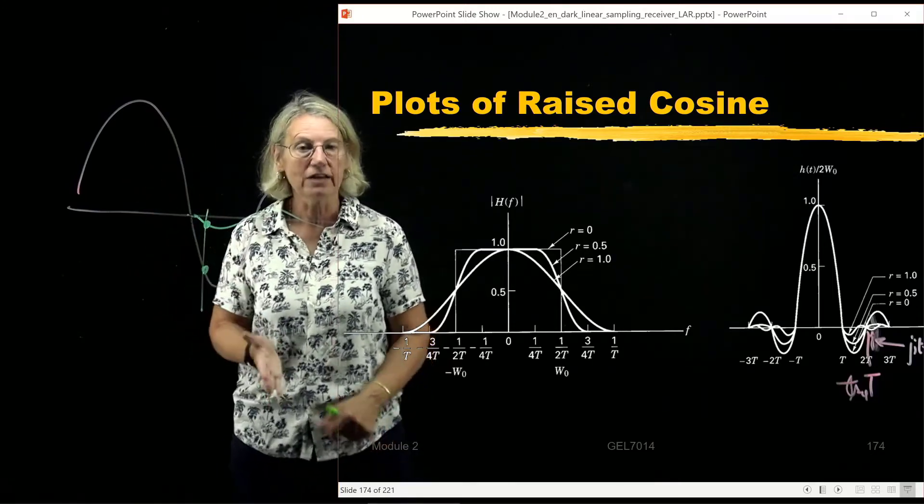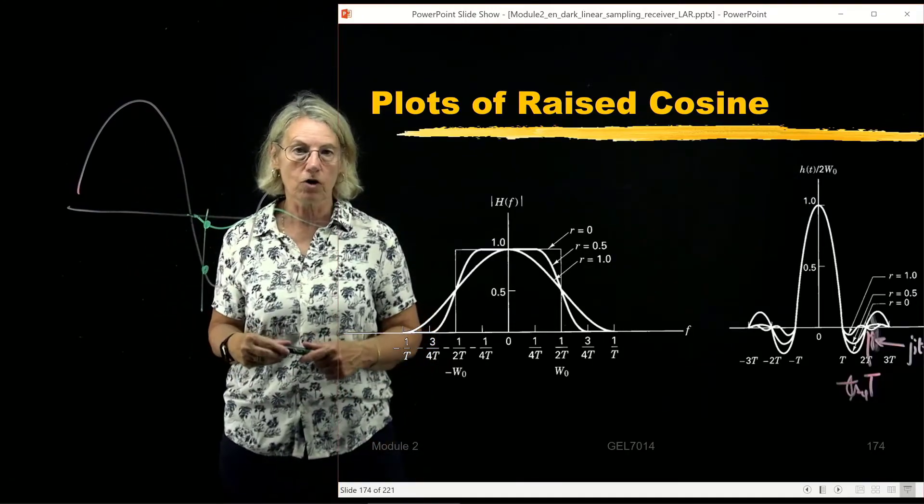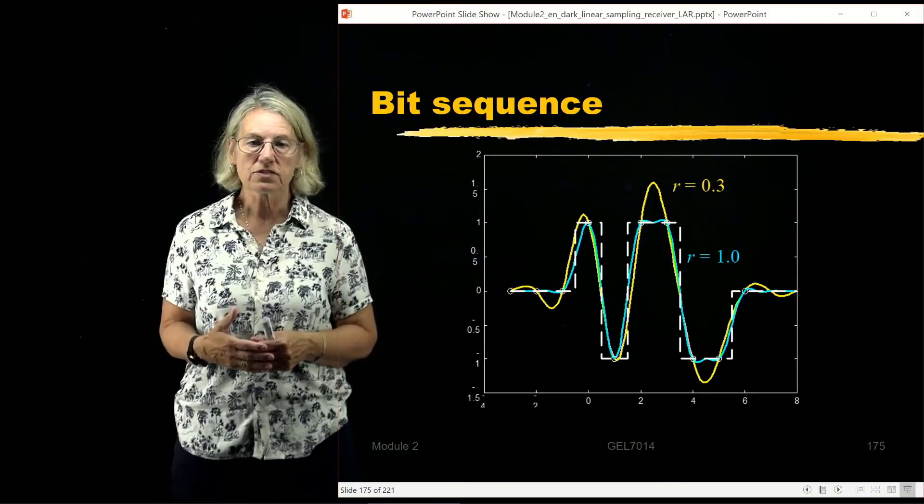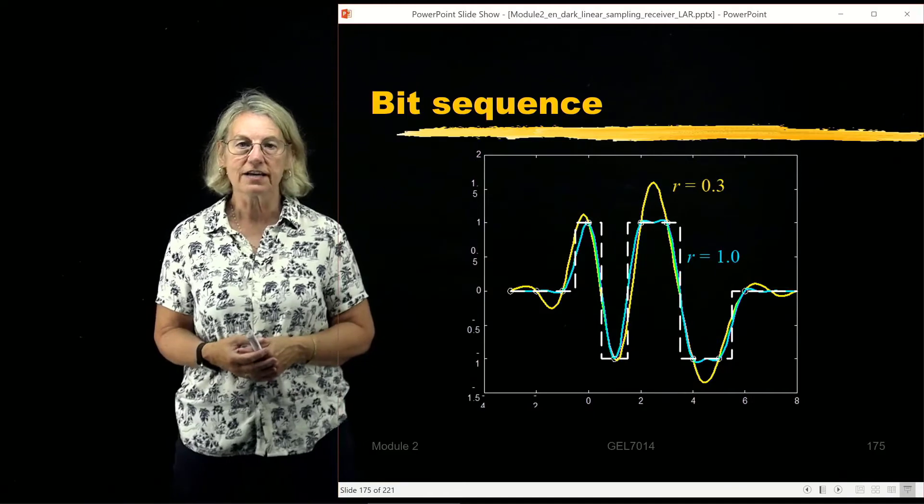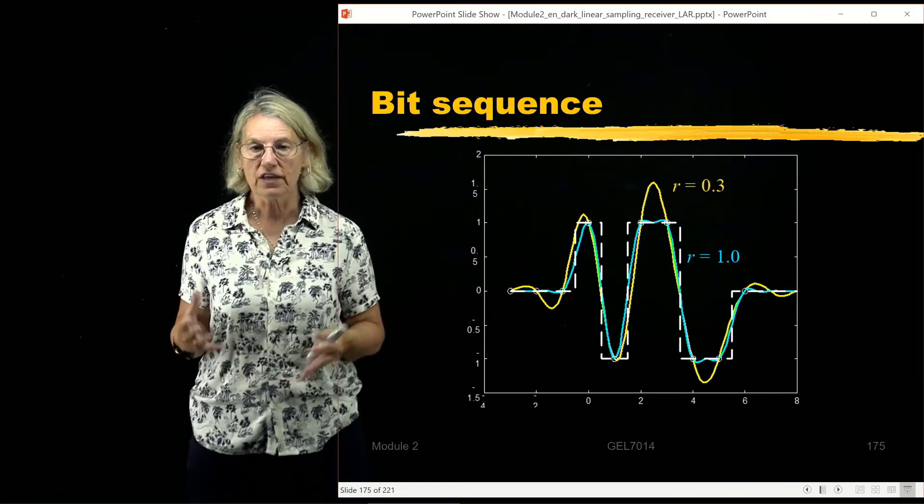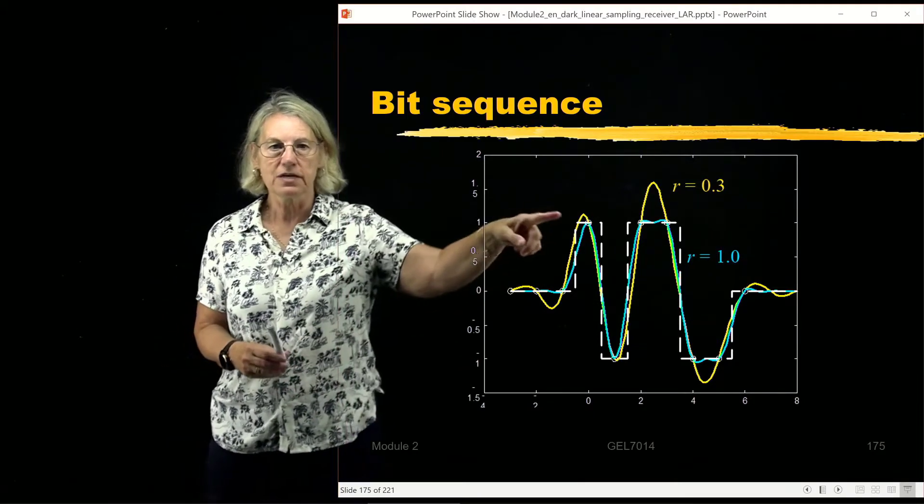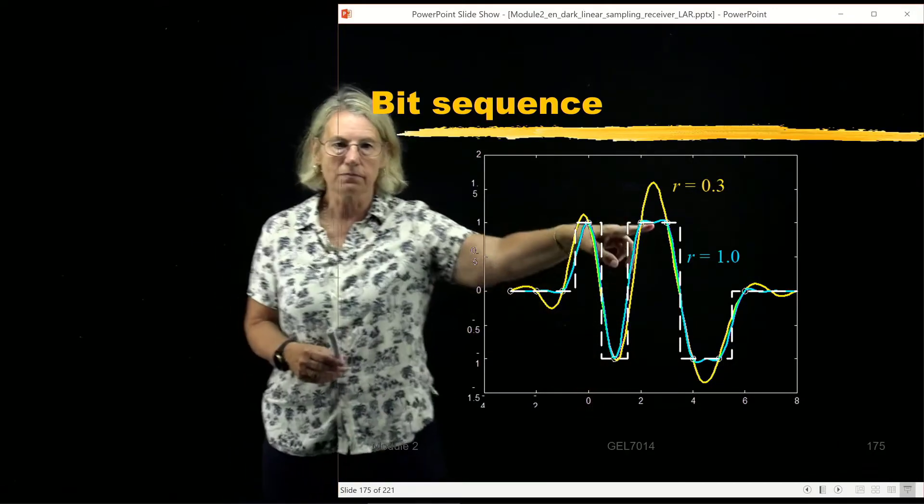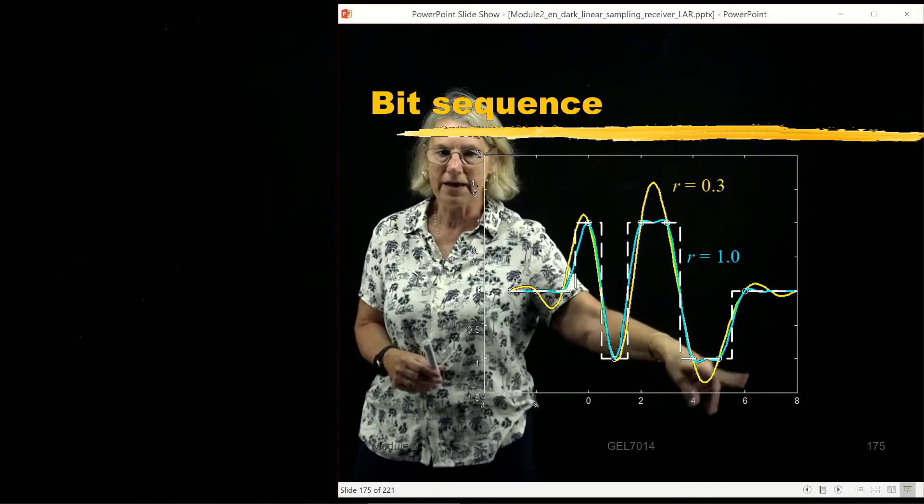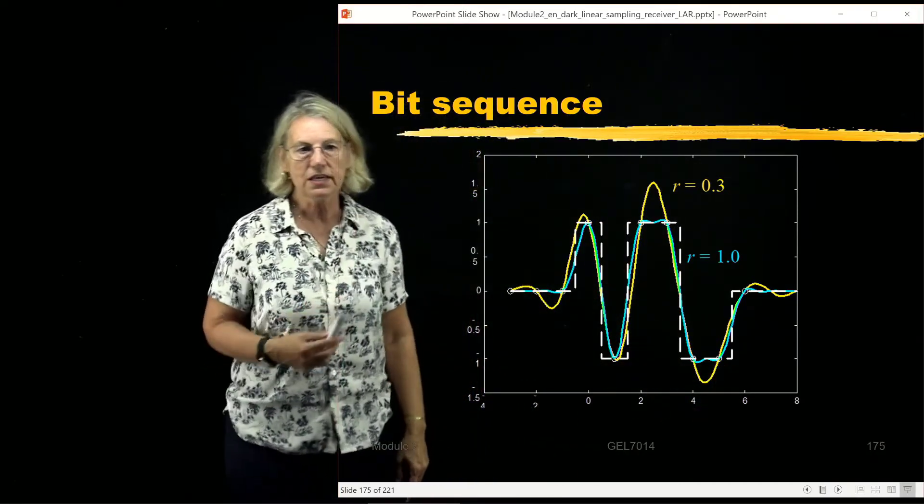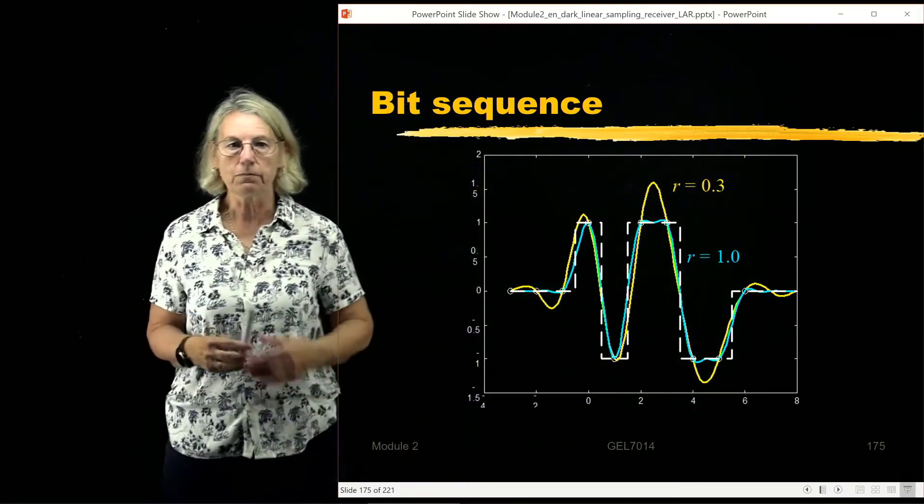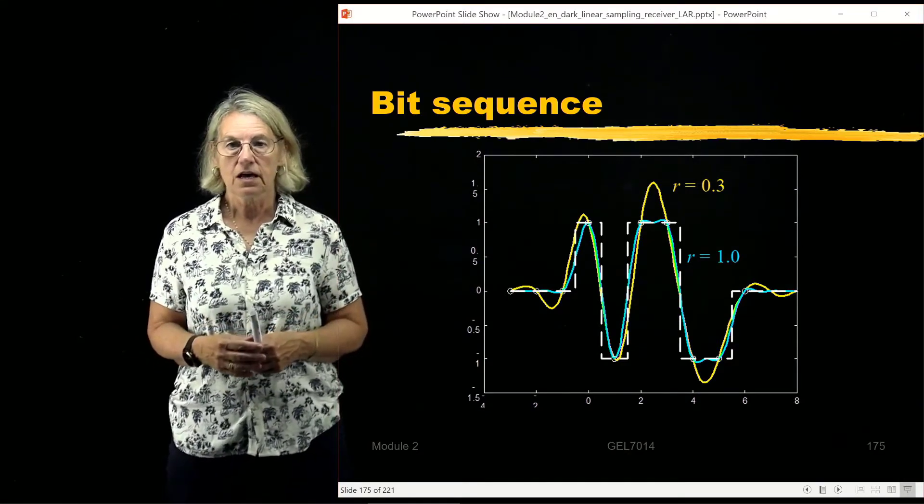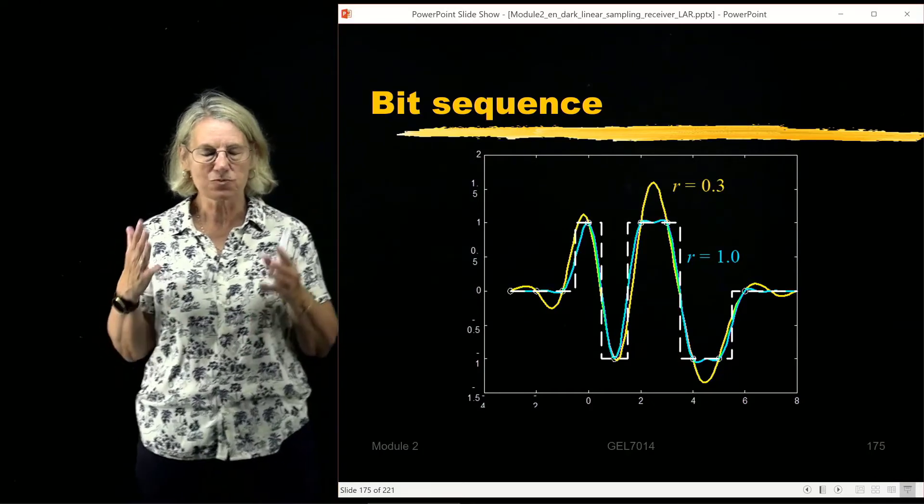Here we have a plot of a bit sequence for two different raised cosine examples. In the dotted lines we show the logical values I'm supposed to be transmitting: a plus one here, minus one, plus one, plus one, minus one, minus one. And we see in yellow and in blue two different raised cosine pulses.